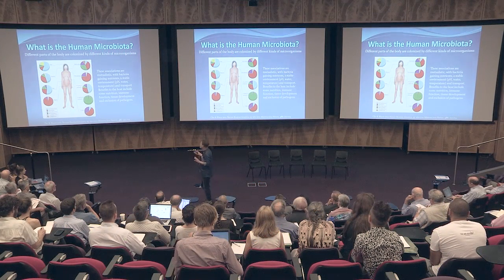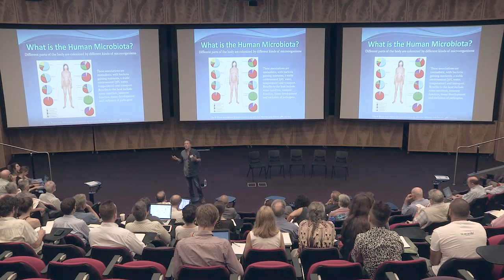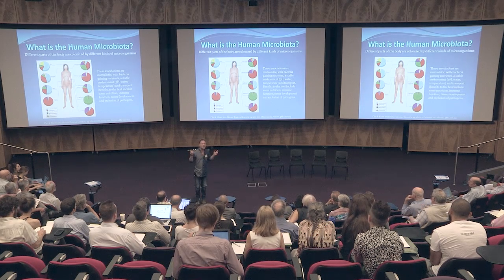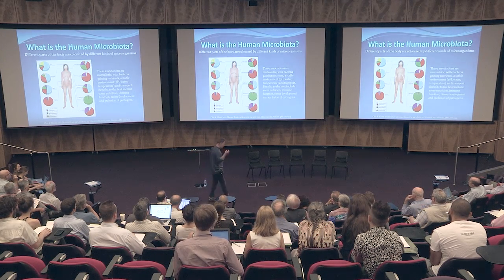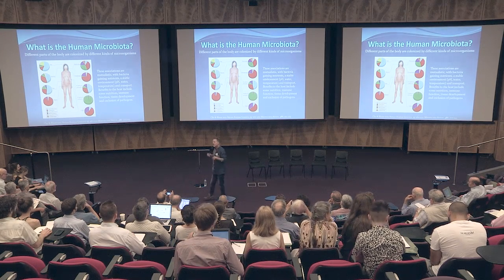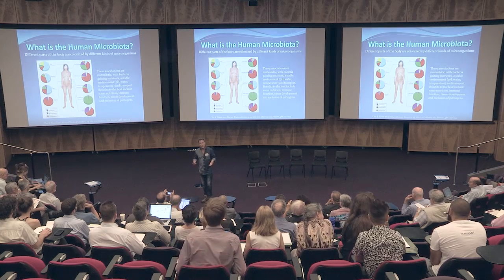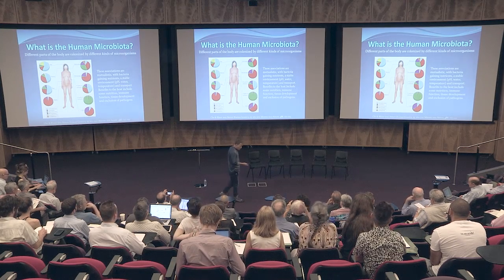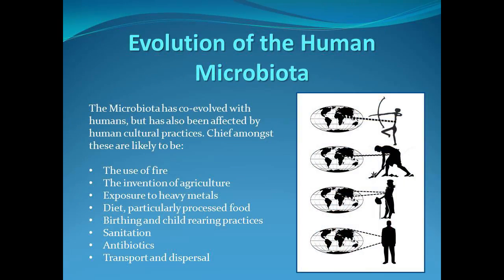The human microbiota differs according to where you look on the body, so every single part of the body is like a different ecosystem. Mary Marples, in a famous piece in the Scientific American, talked about the cool woods of our scalp or the tropical forest of armpit and crotch. The easiest ecosystem to examine is the digestive system. This microbiota has co-evolved with us - it's meant to be there.